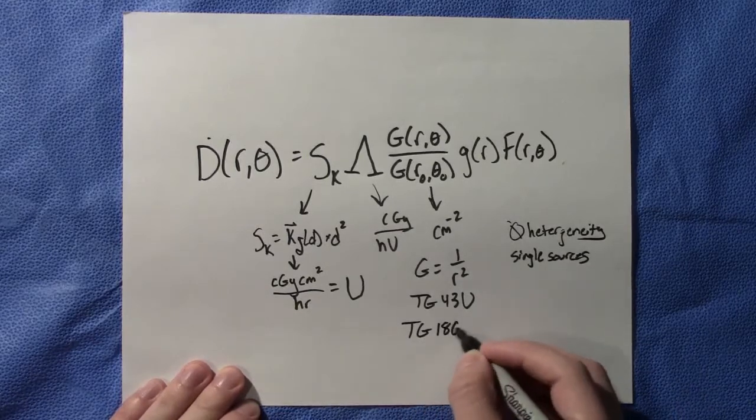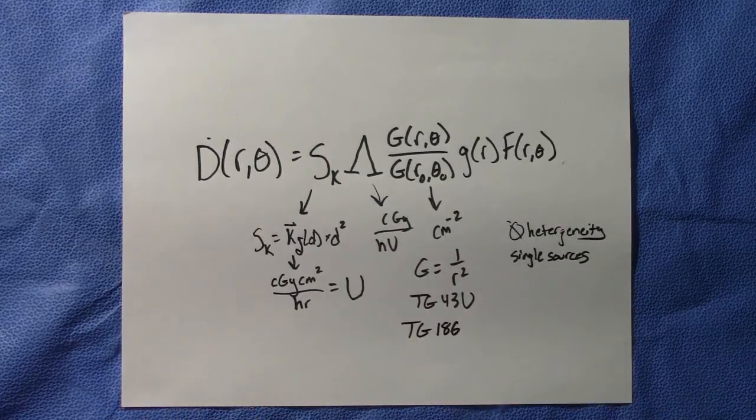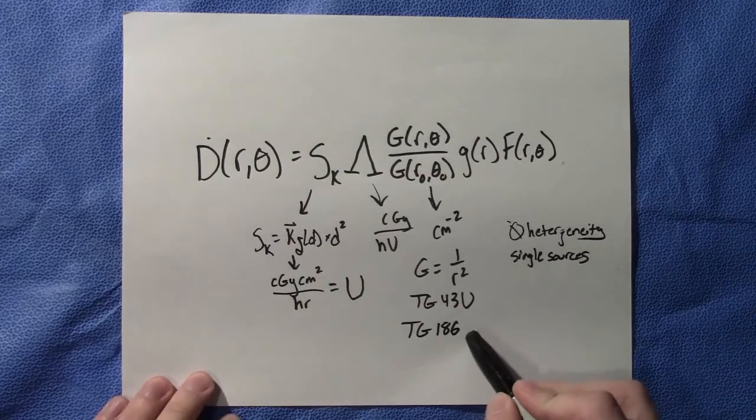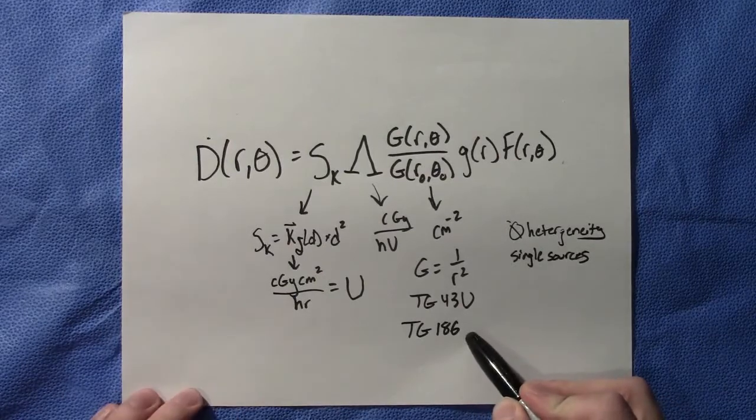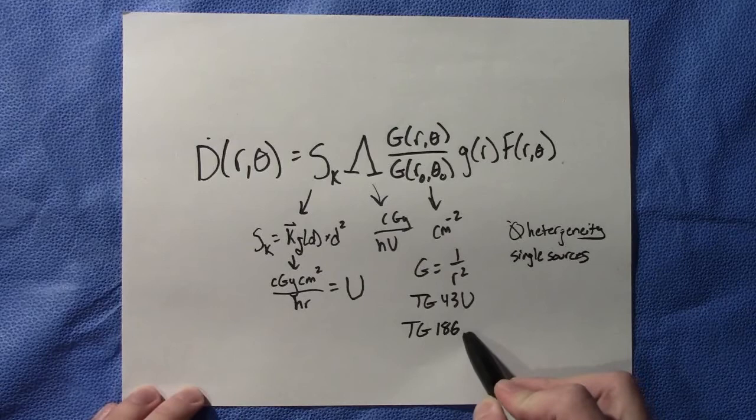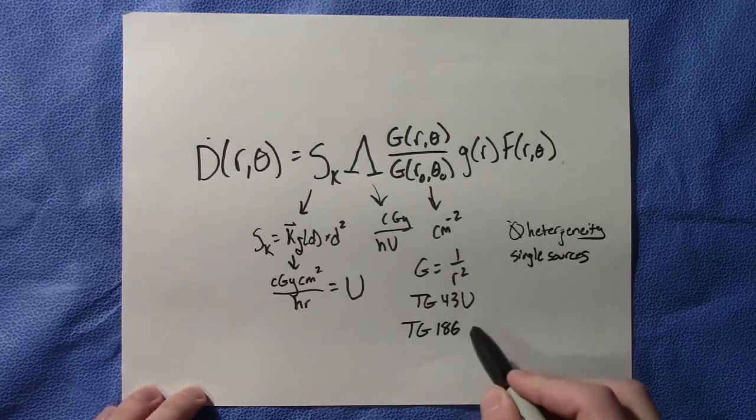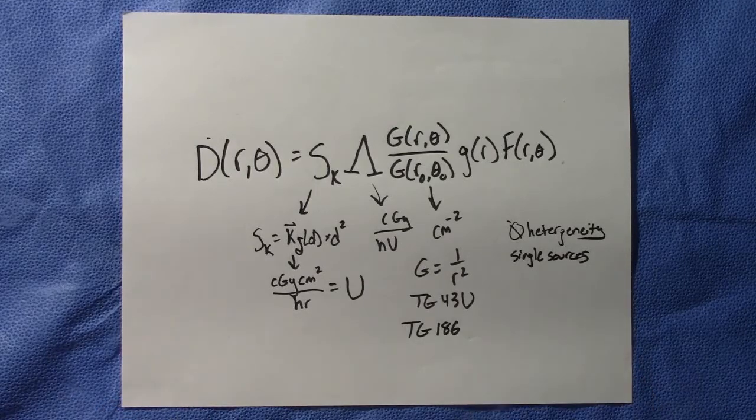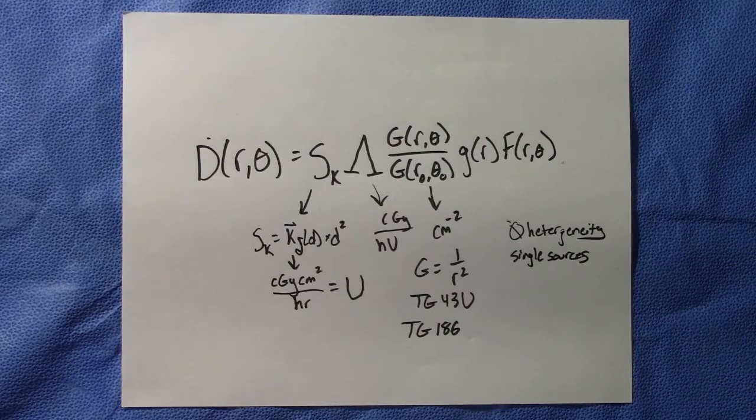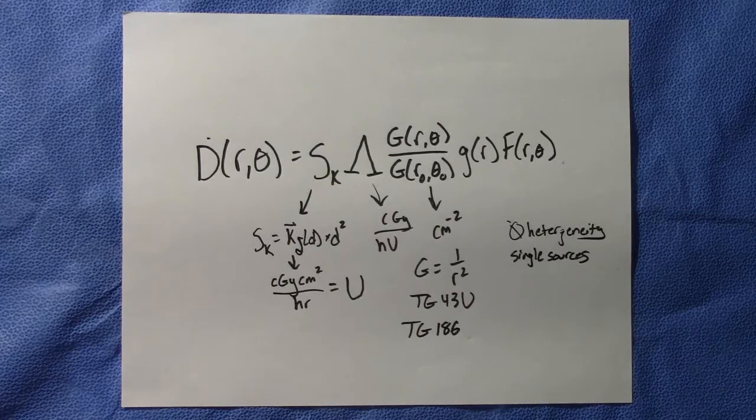And finally, TG186 is a new, primarily being used in research, but that is essentially our dose rate equation that includes heterogeneity corrections. So although not clinically being used yet is still something that is definitely intriguing and we may move to in the future.